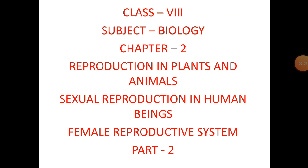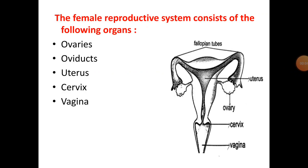Now we will discuss the female reproductive system. The female reproductive system consists of a pair of ovaries, oviduct, uterus, cervix, and vagina.